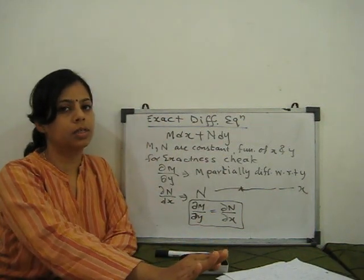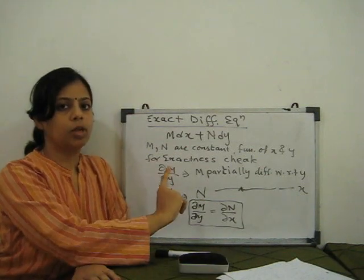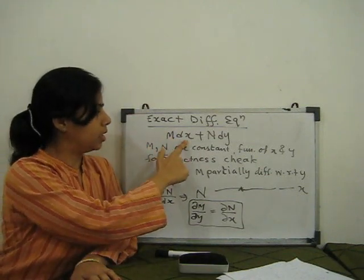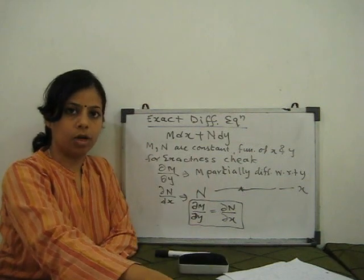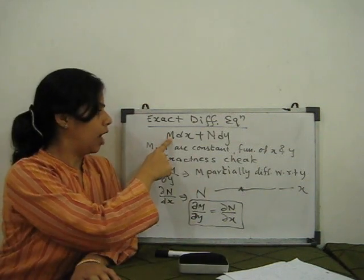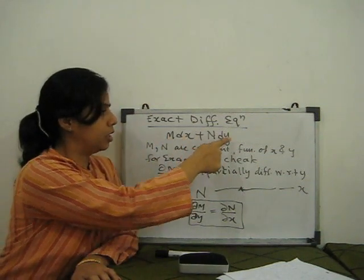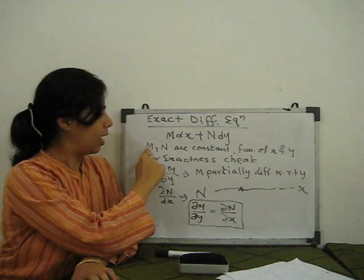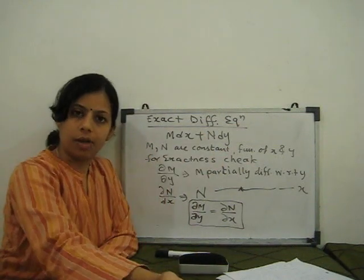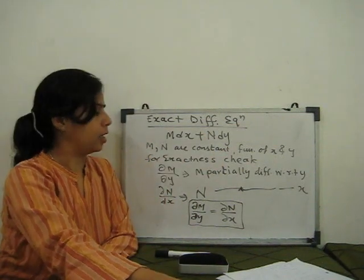Which equation is called an exact differential equation? The definition of a first order, first degree equation uses the form M dx plus N dy. Whatever equation is given, you have to arrange it in this form, where M and N are constants or functions of x or y.